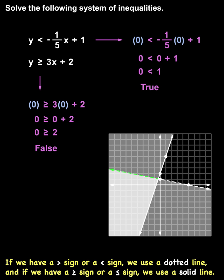Note that the points along the dotted boundary line of this region are not solutions to the system, but the points along the solid boundary line of this region are solutions to the system.